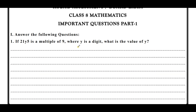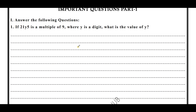Now moving to the first question. If 21y5 is a multiple of 9, where y is a digit, what is the value of y? If a number is a multiple of 9, or if a number is divisible by 9, then its sum of digits is also divisible by 9. The digits are 2, 1, y, and 5. Since 21y5 is a multiple of 9, the sum of digits is divisible by 9.